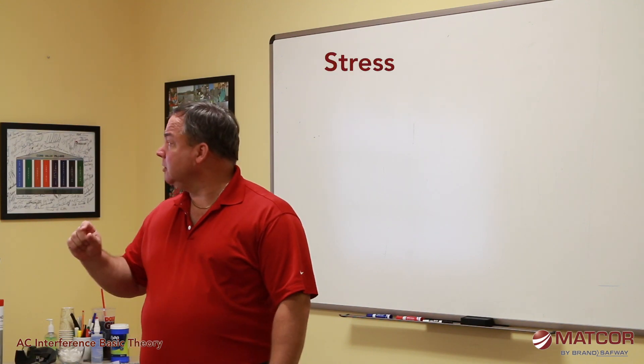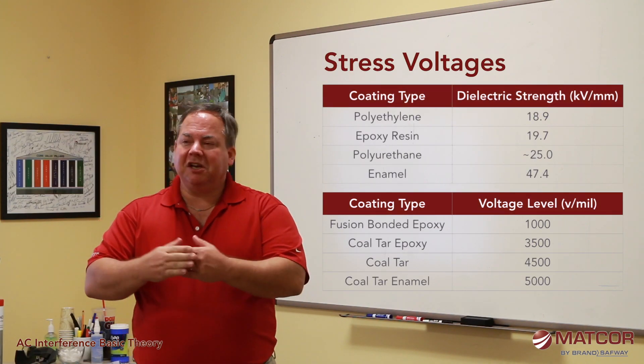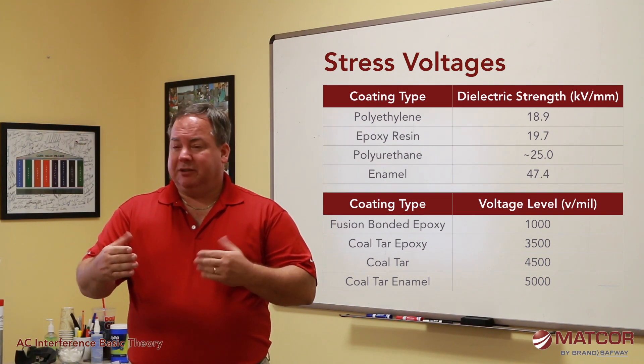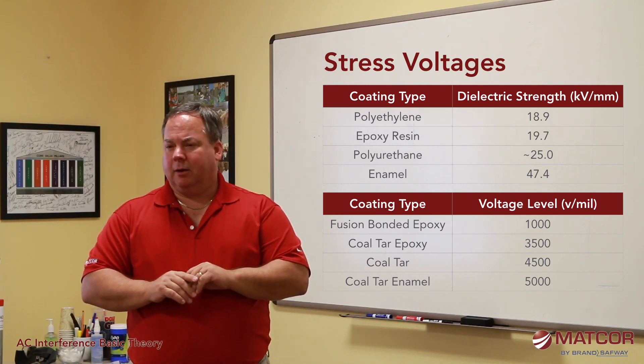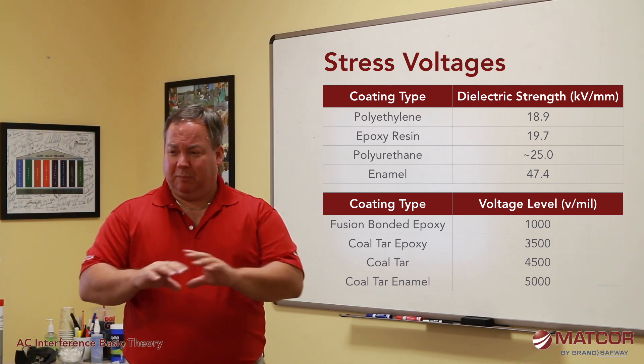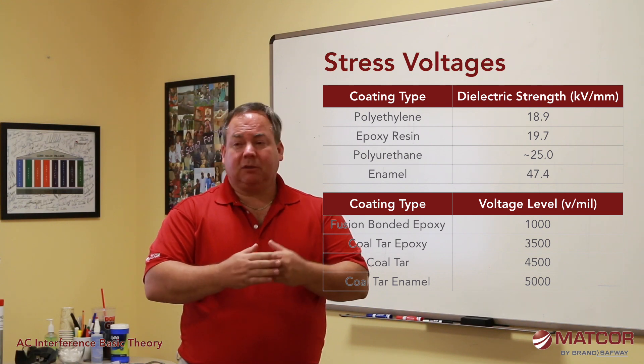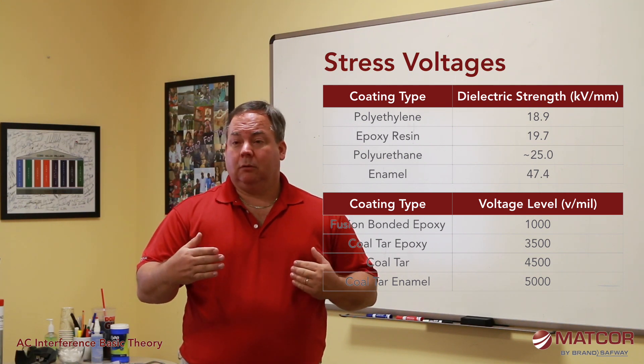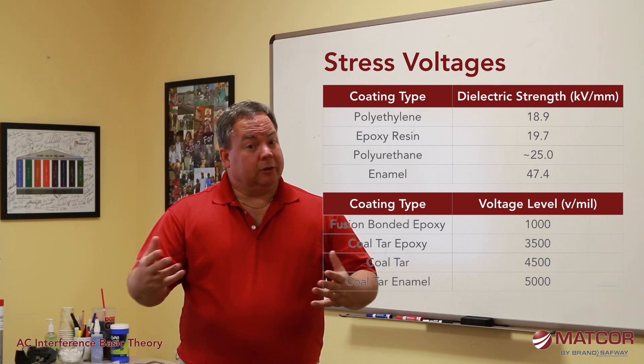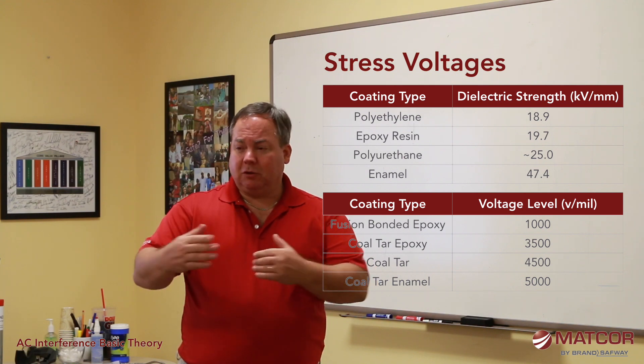Pipelines have coatings — most pipelines, almost all oil and gas type hydrocarbon pipelines, are going to have a coating system. That coating can handle only so much voltage stress. Different coatings have different amounts of voltage stress they can handle. If you exceed that voltage gradient, the coating can be damaged — it'll frizzle up, become weak, go friable. Bad things can happen to a coating system if it's subjected to a voltage gradient higher than what it's rated for.